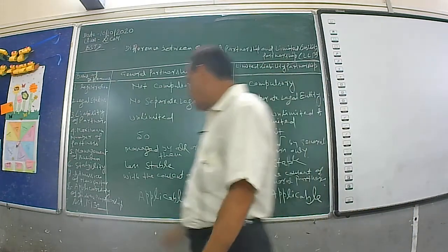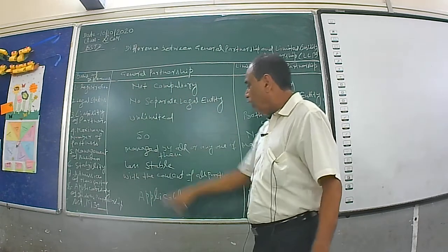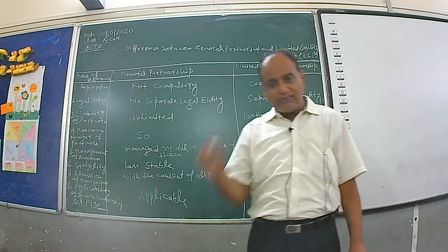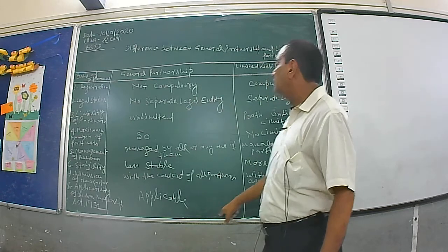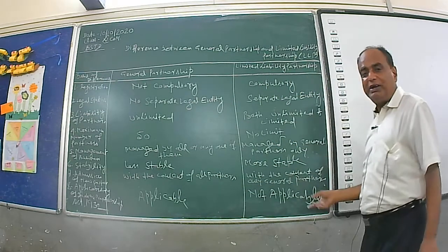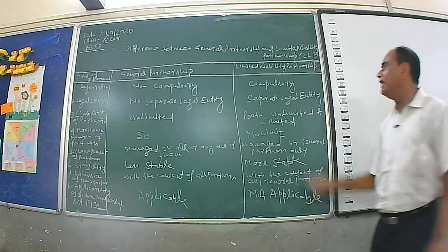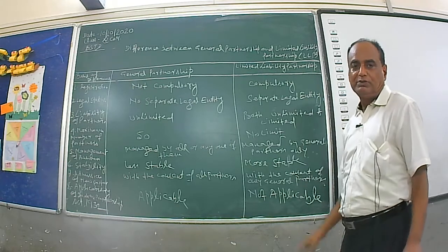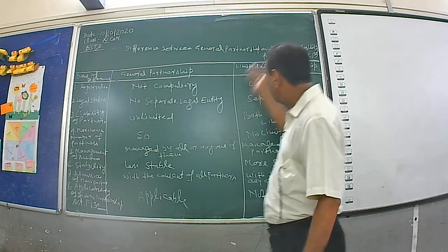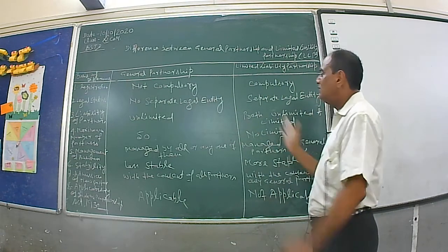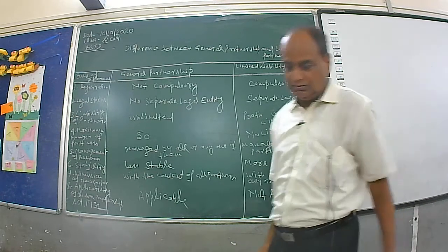Applicability of Indian Partnership Act 1932: all provisions of the Indian Partnership Act 1932 are applied in general partnership, but they are not applied in limited liability partnership. On the basis of these keywords, you can distinguish between general partnership and limited liability partnership very easily. Thank you.